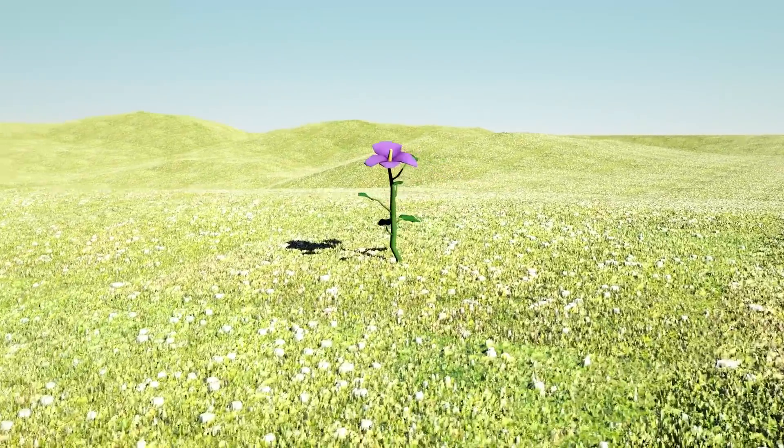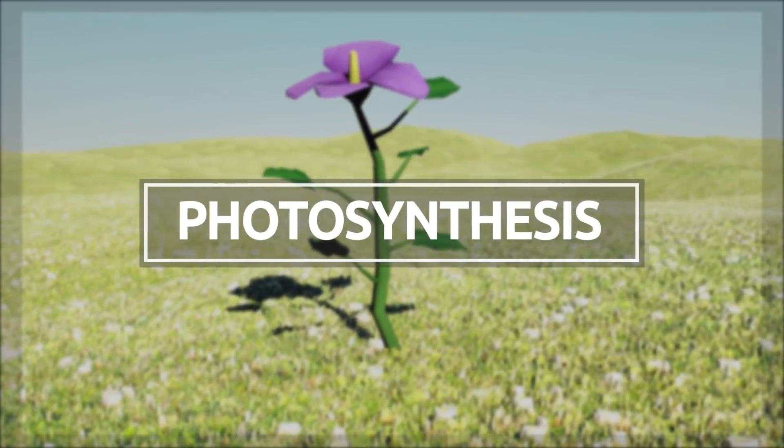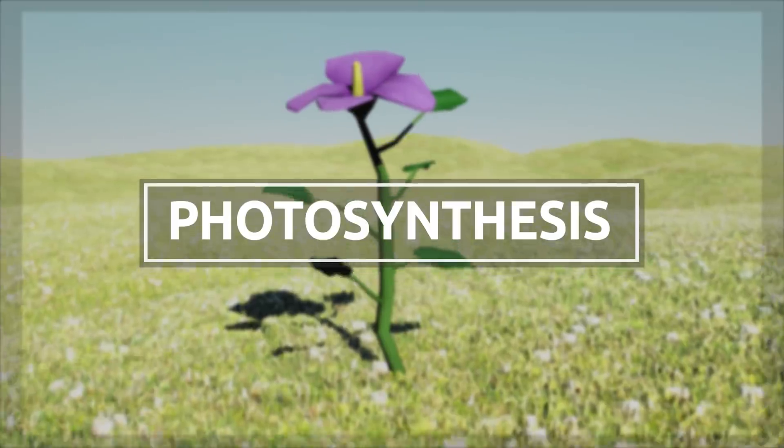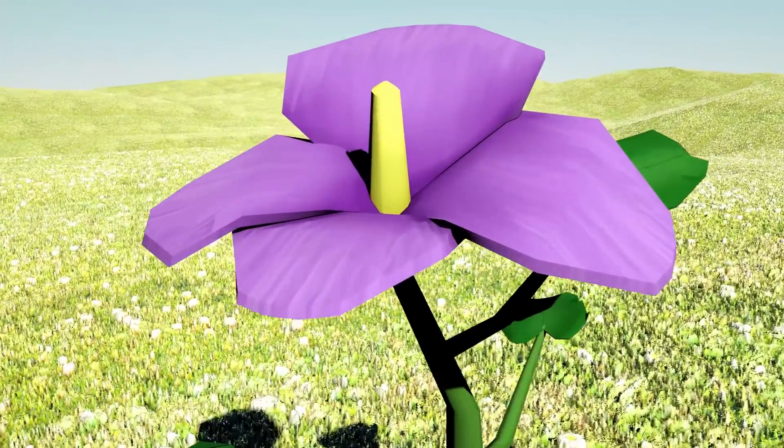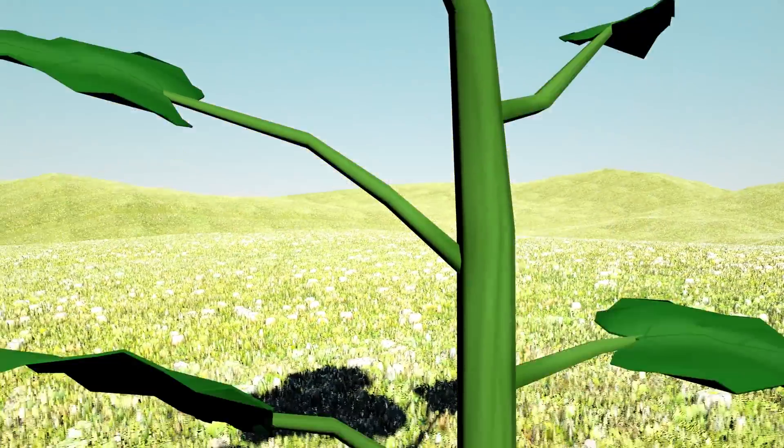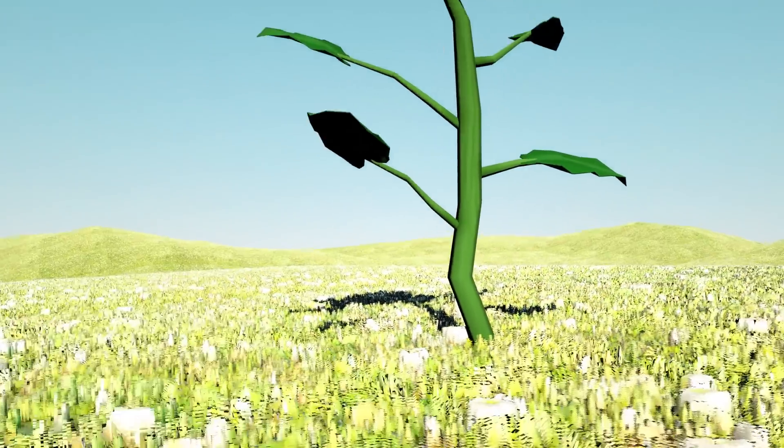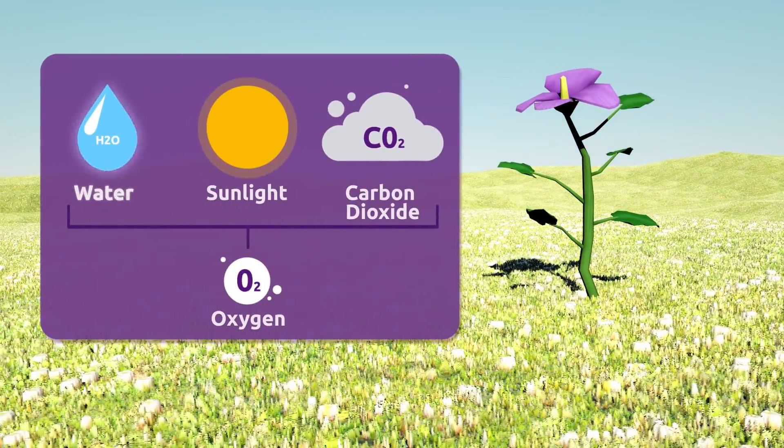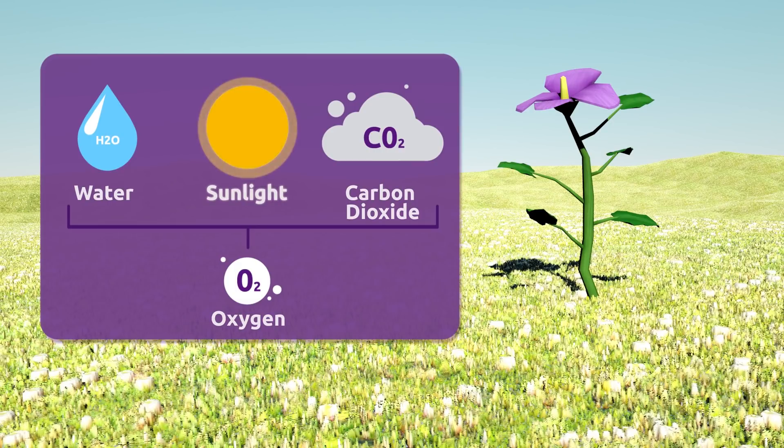Today, we're going to learn about photosynthesis. Photosynthesis is a process during which plants make their own food. During this process, plants transform water, sunlight, and carbon dioxide into oxygen.